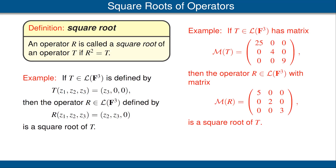For our second example, suppose T is the operator on F³ whose matrix is diagonal with entries 25, 4, and 9 along the diagonal, with respect to the standard basis of F³. Let R be the operator on F³ whose matrix is also diagonal, but with 5, 2, 3 along the diagonal. Then R is the square root of T because R² = T. The easy way to verify this is to realize that for matrix multiplication of diagonal matrices, one simply multiplies the corresponding diagonal entries.